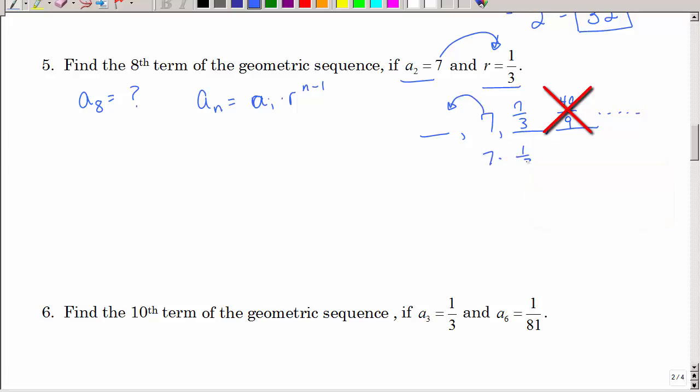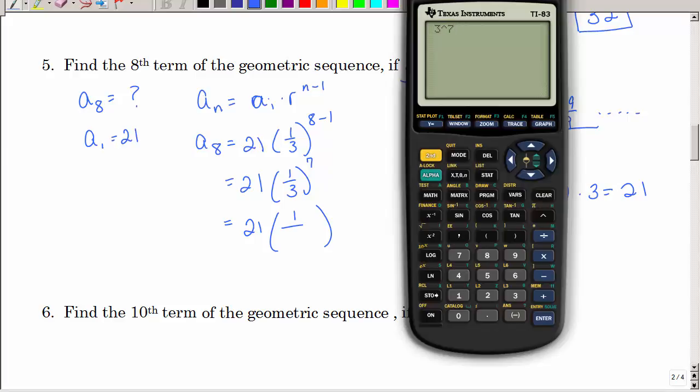Well, if I multiplied by 1 third to go forward, I could divide by 1 third to go backwards. So, 7 divided by 1 third is 21. So, my first term is 21. So, this is how I'm going to approach it. I'm going to say my eighth term is my first term times r to the 8 minus 1 power. That's 1 third to the 7th power. That's 21 over 1. And then, because 1 to the 7th power is 1. But what is 3 raised to the 7th power? 2,187. So, I have 21 over 2,187.